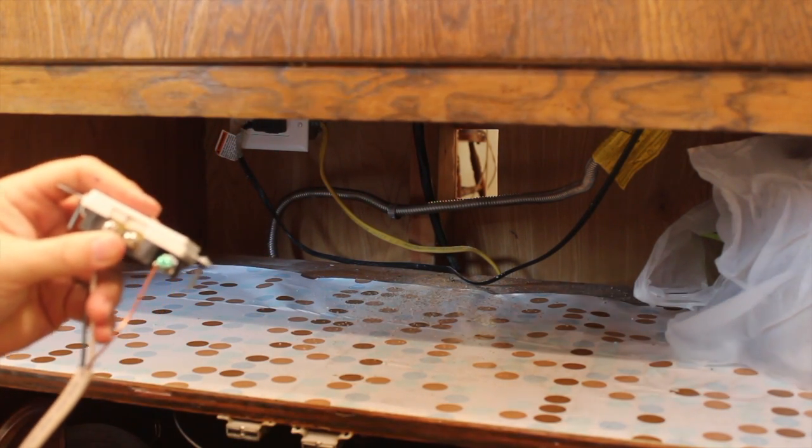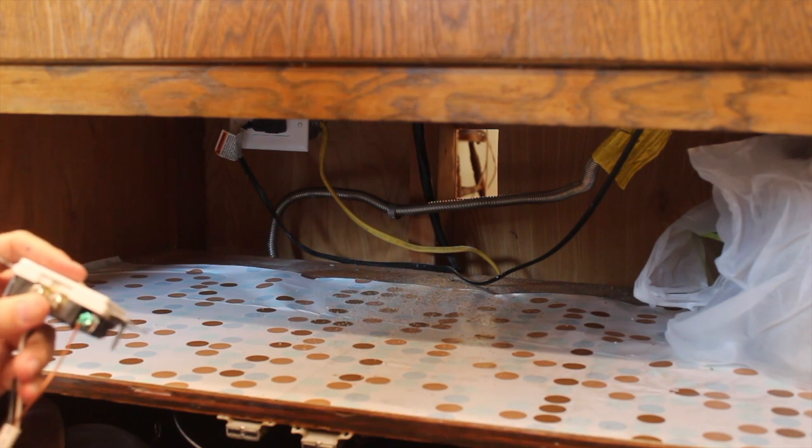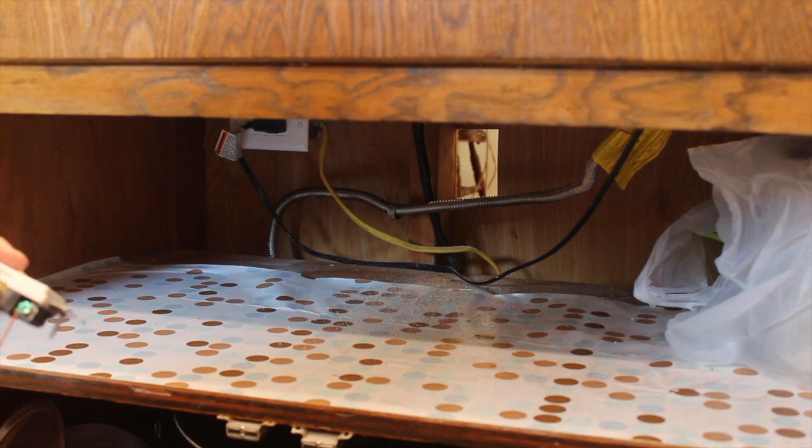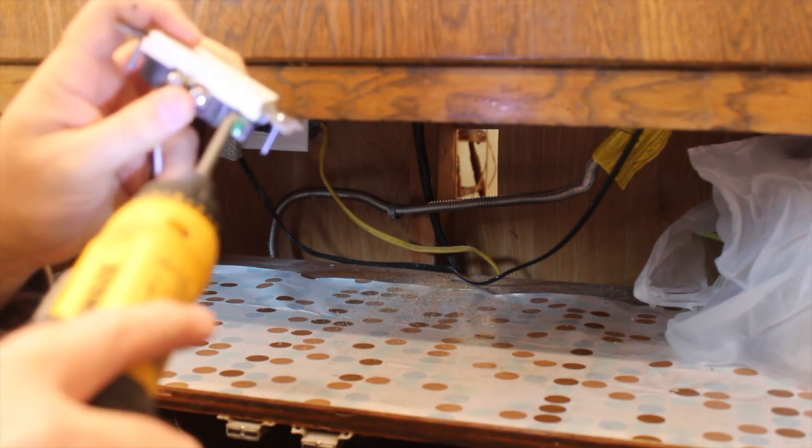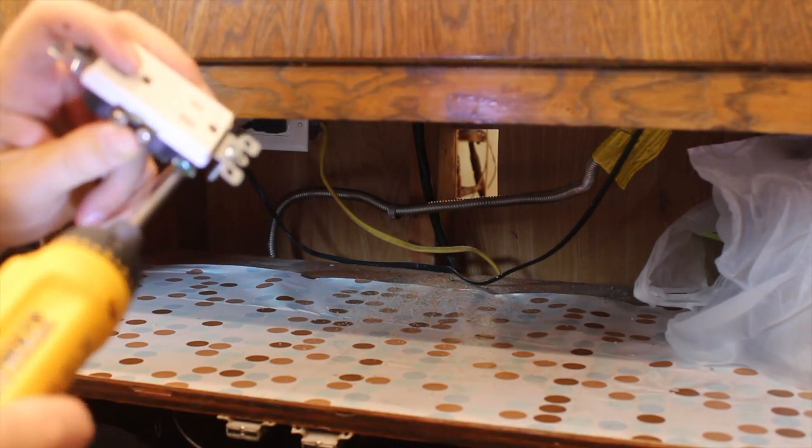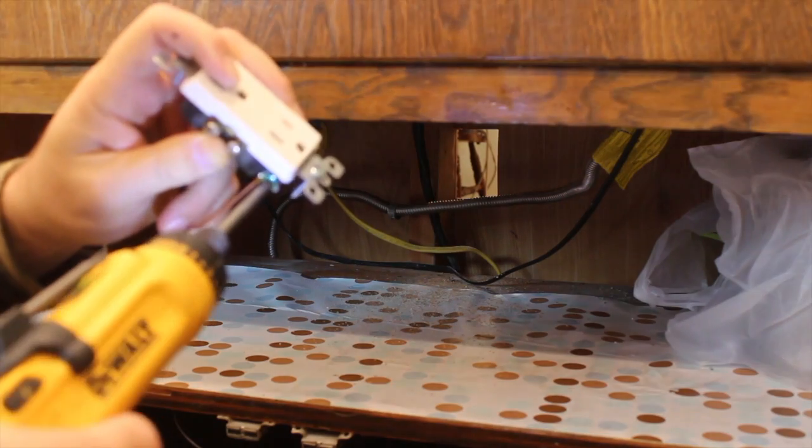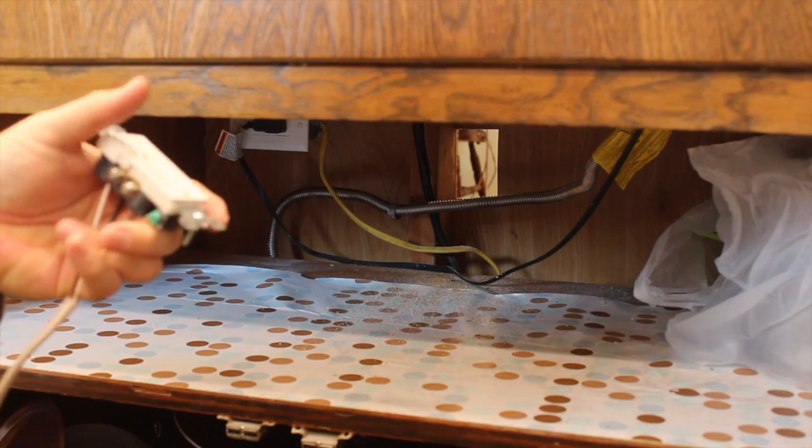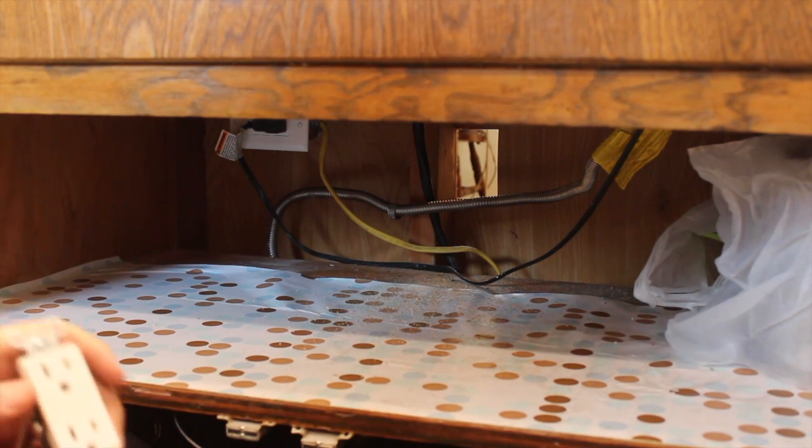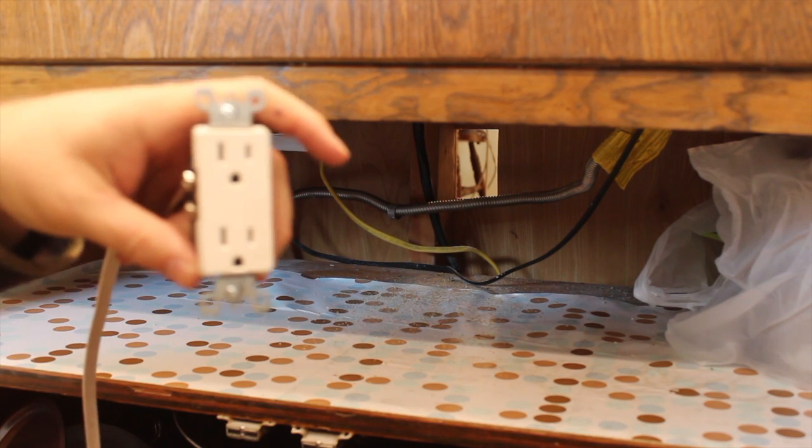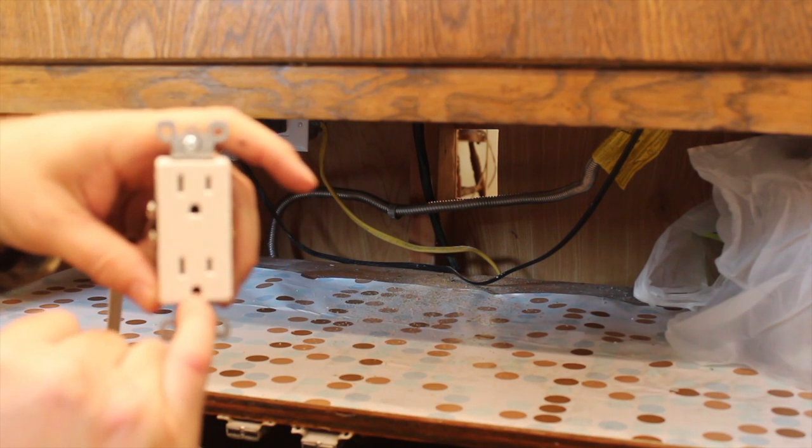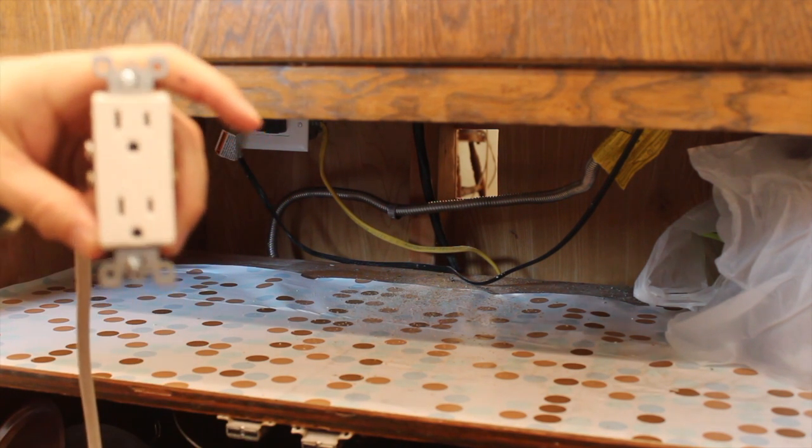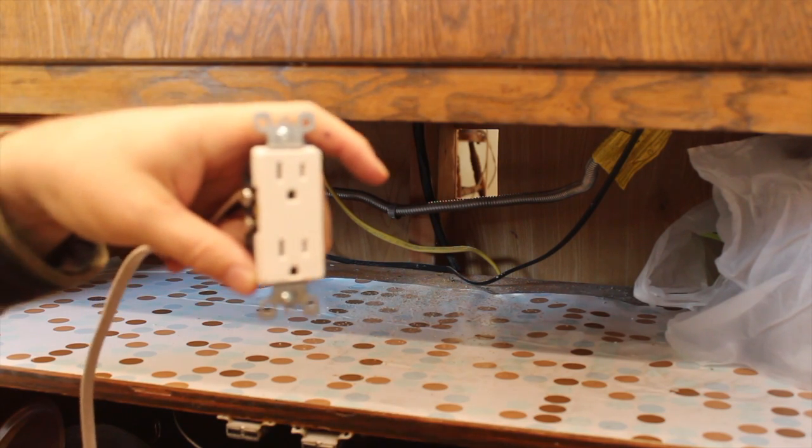I've got my fancy DeWalt screwdriver and I'll just tighten that up. I need a new tip, my tip's getting a little worn out. So there's that. So this is electrical, and when you put the electrical in a box, by the way, you always put it like this with the ground lug on the bottom. You always think of this like a face, there's the eyes and the mouth, and that's the normal way you put an electrical outlet in a box.